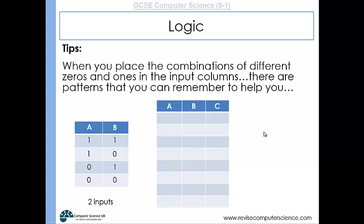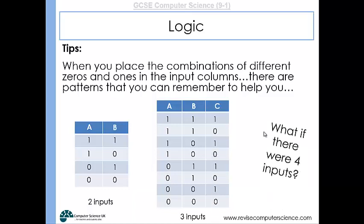For B: 1,1,0,0,1,1,0,0. For C: 1,0,1,0,1,0,1,0. That covers all possible combinations. If there were four inputs you would have 16 possible combinations — so in your A column, eight ones and eight zeros; in the B column, four ones, four zeros, four ones, four zeros, and so on. That's a quick way of finding all the combinations for your truth table. Then work out the outputs for each column in turn.